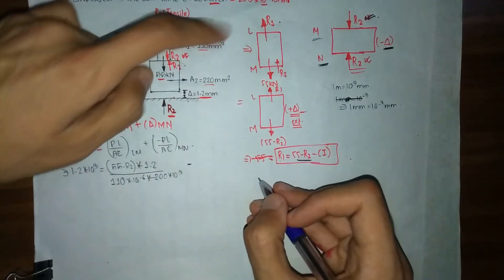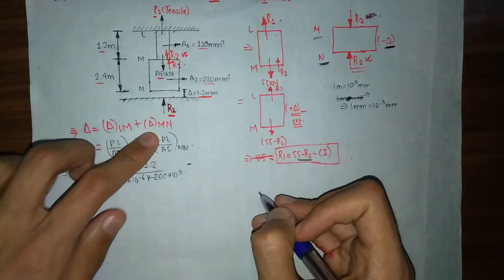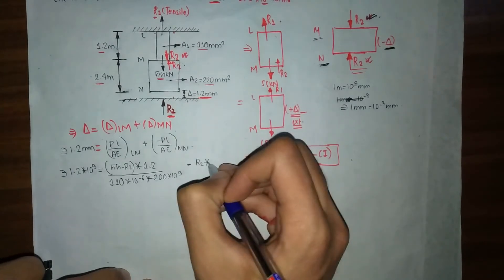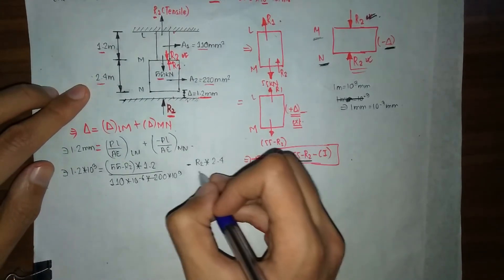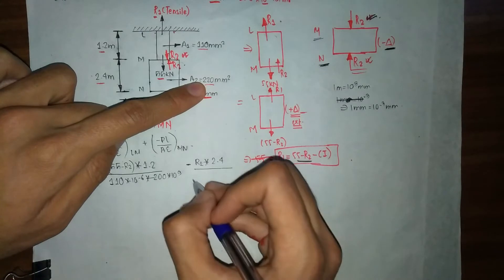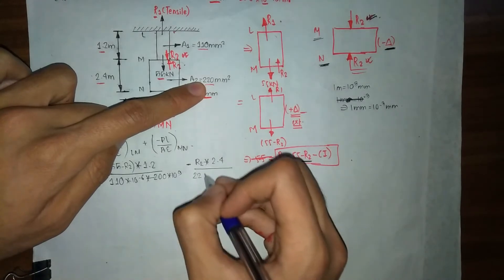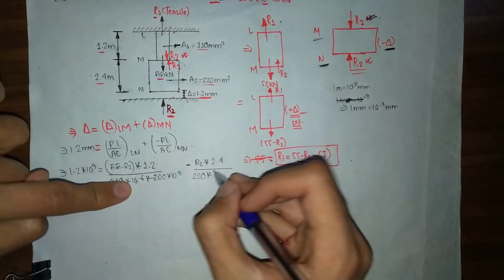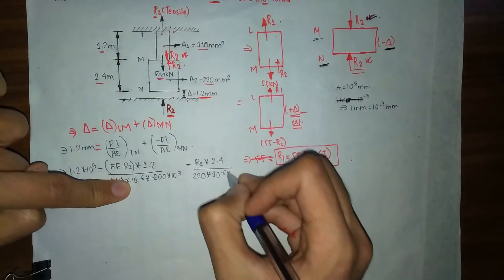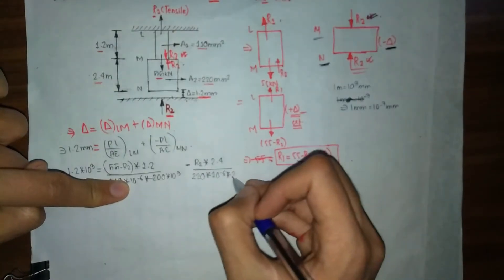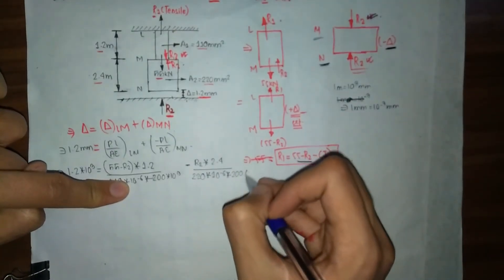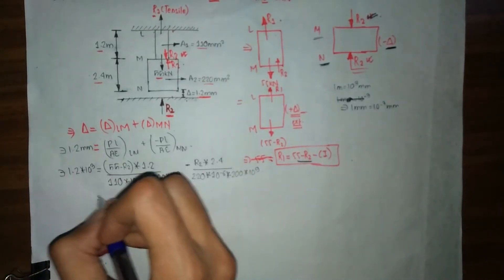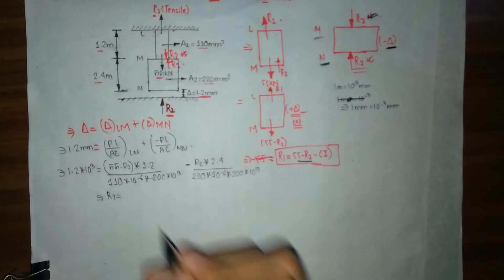For the MN portion, we take the minus sign outside: R2 × 2.4, divided by area 220 mm² (converted by multiplying by 10 to the power minus 6), times E equals 200 × 10⁹. On solving this using a calculator, we get our value of R2.